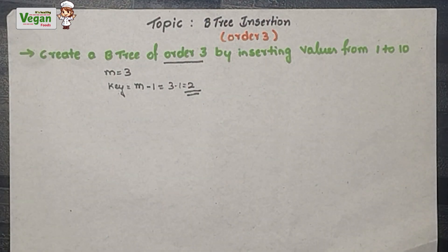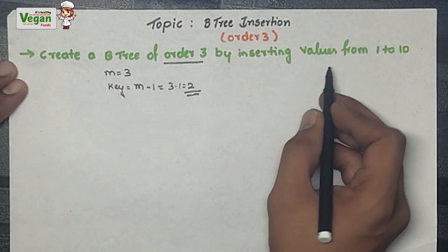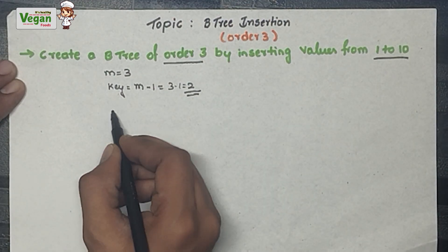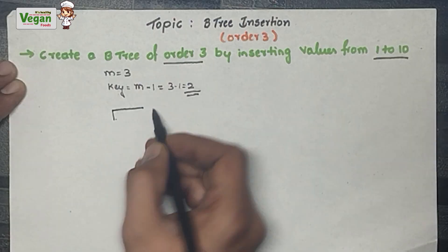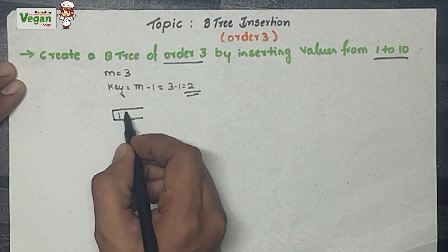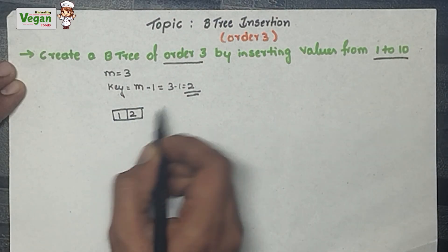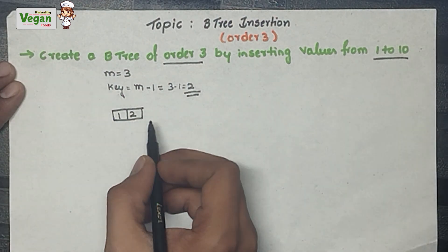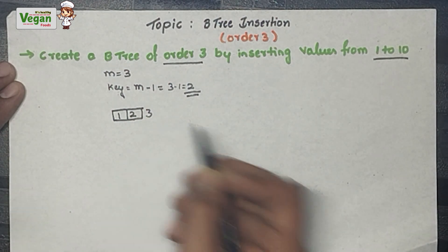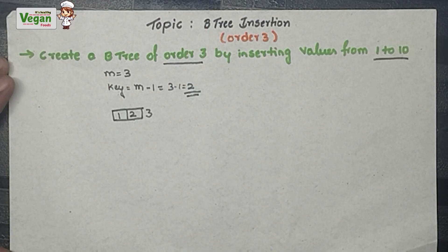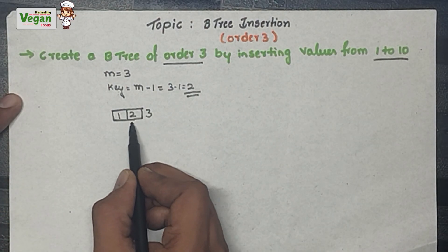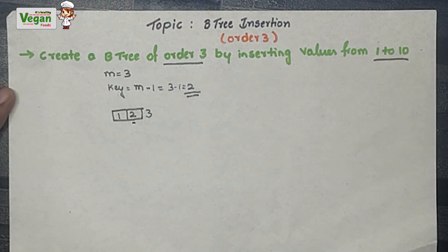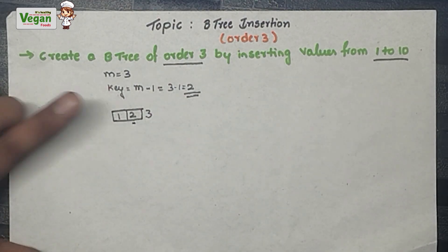Now let's start the problem. We insert values from 1 to 10. I insert 1 and 2 — the maximum key value for a node is 2. Now I want to insert 3. I write 3 here but there is no space. What I will do is take the median element, which is the middle one — 2 is the middle one.